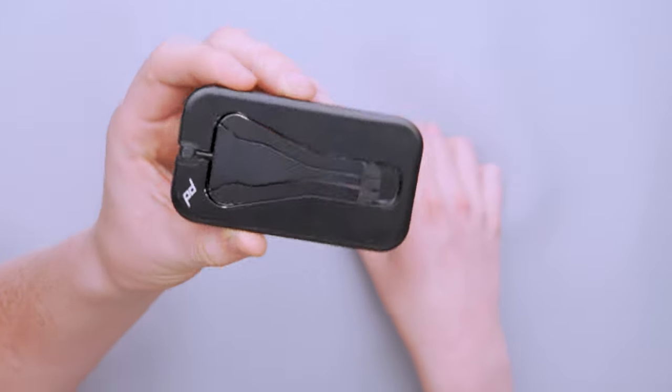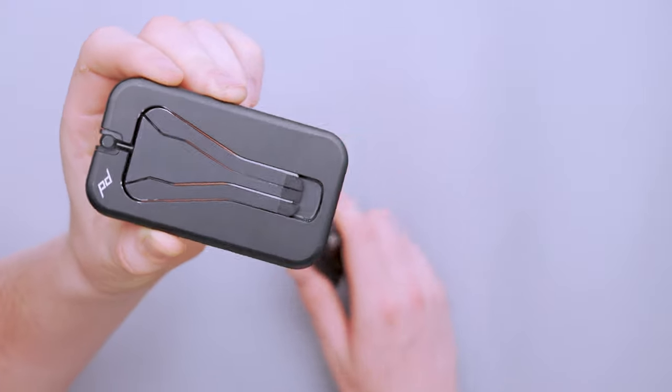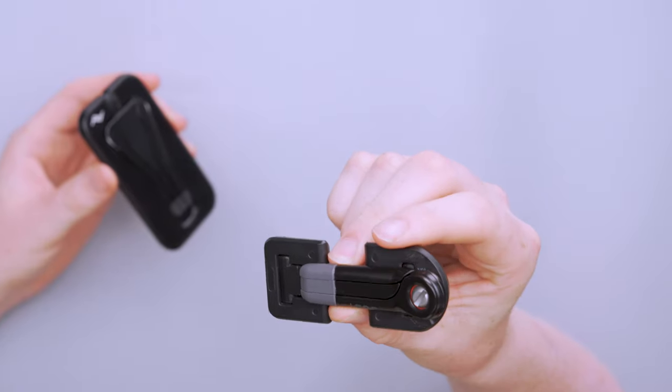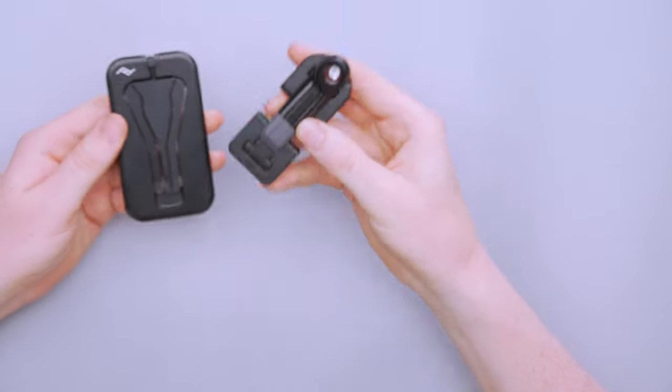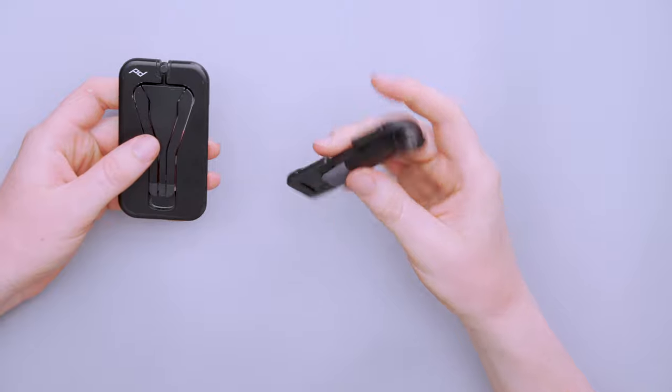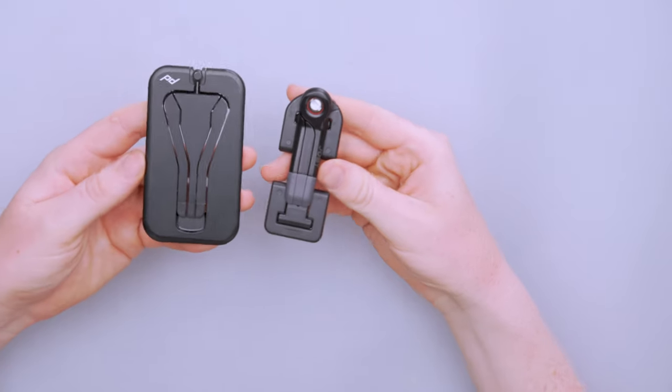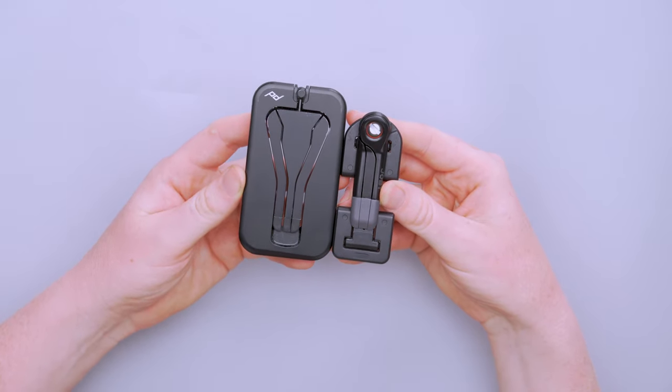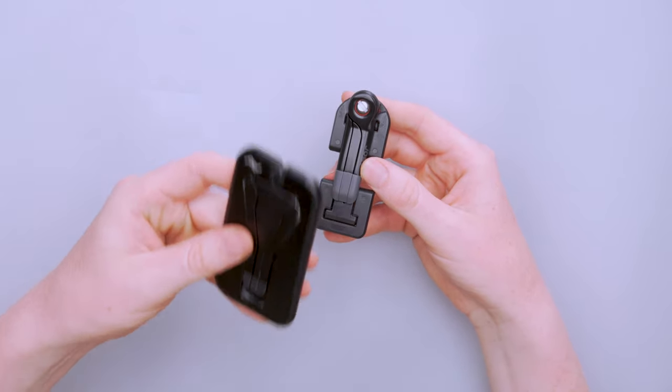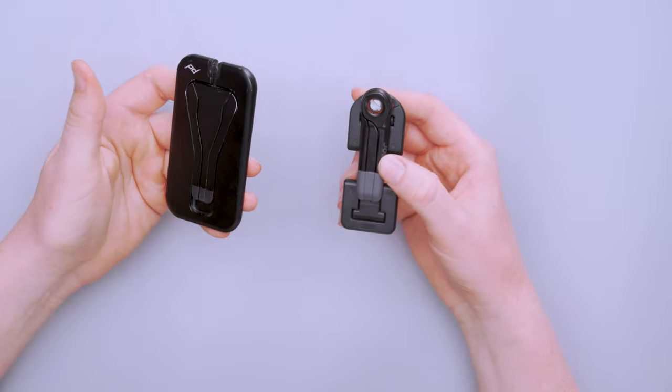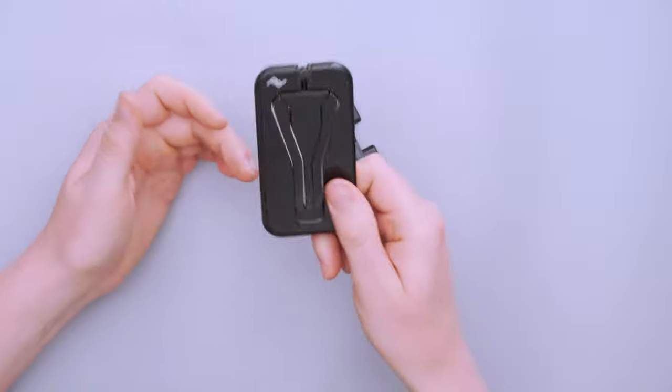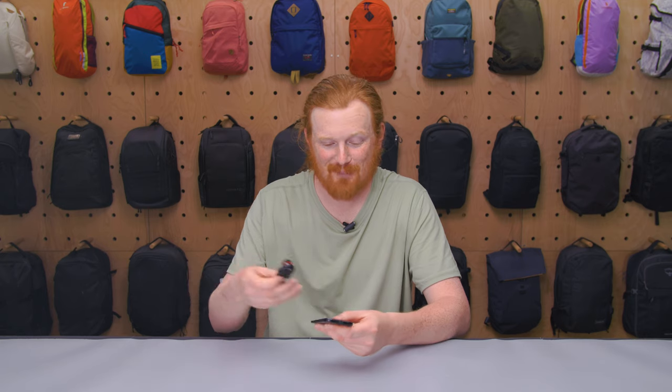This one comes in at 2.68 ounces or 76 grams, and the Joby comes in at 1.59 ounces or 45.1 grams. So you do have a little bit of weight saved with the Joby. When it comes to size, you can see they're similar in size but the Joby does have the leg up as far as portability. But if this is attached to your phone it doesn't really take up room in your pack. This is something you have to bring separately, but if you're not keeping this on your phone all the time, it's going to take up more room wherever you're stowing it.